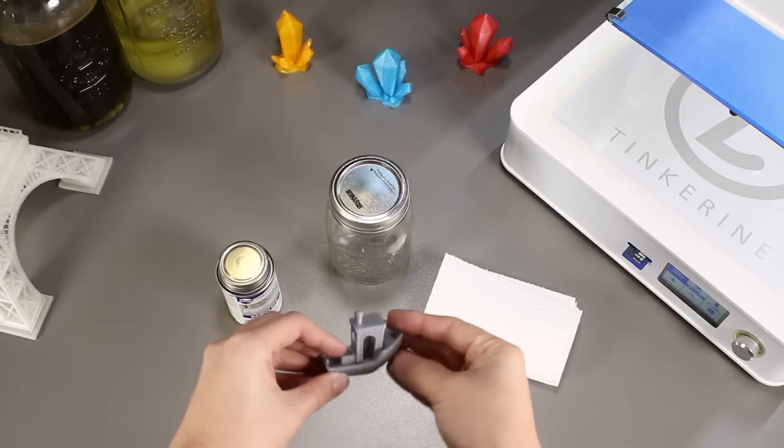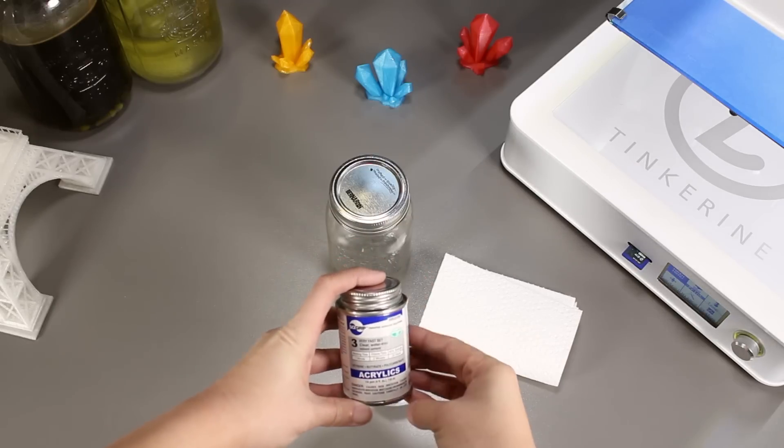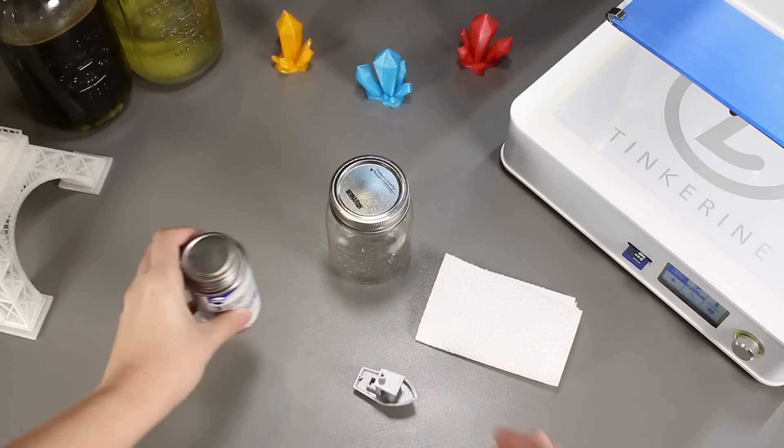Welcome to another episode of Tinkering Experiments. Today we are going to try again and vapor smooth our benchy boat. This time we will try with methylene chloride instead.